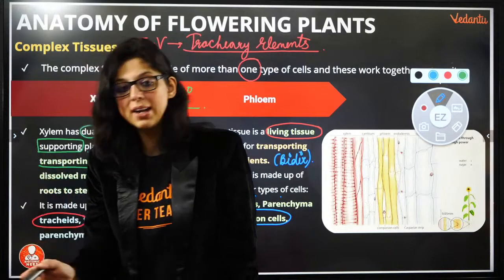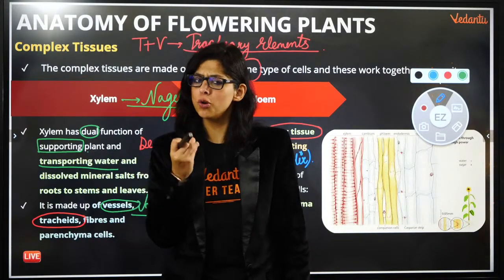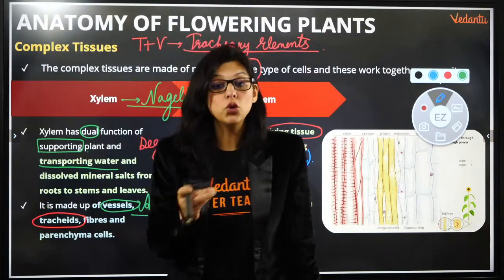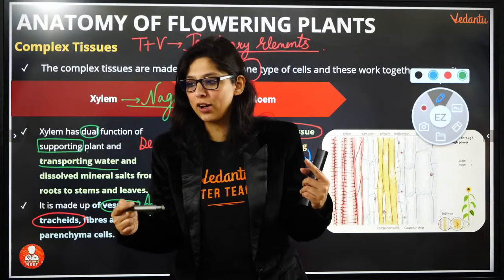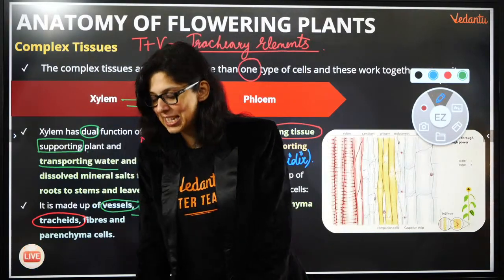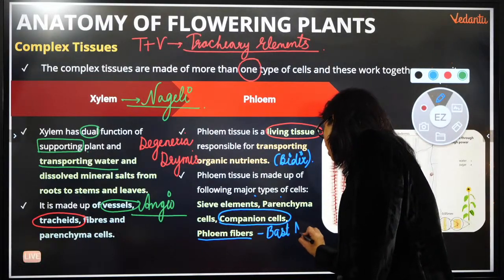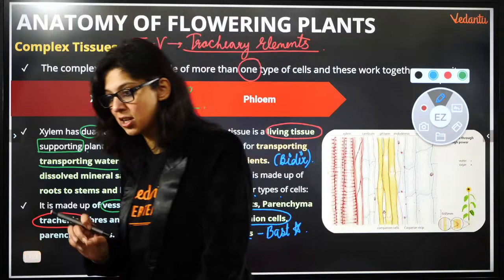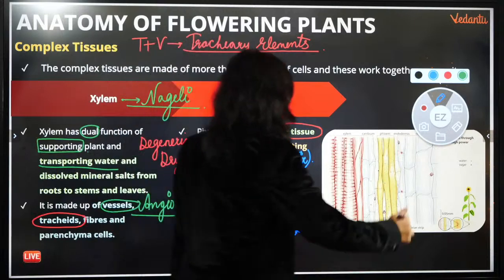Companion cells and sieve tube cells come from a similar origin, but sieve tube cells are completely empty — they do not have cytoplasm or a nucleus because they are meant to conduct food. The companion cells regulate the flow. Phloem fibers are called bast — a very important MCQ word — found in jute and hemp. These are referred to as bast fibers.